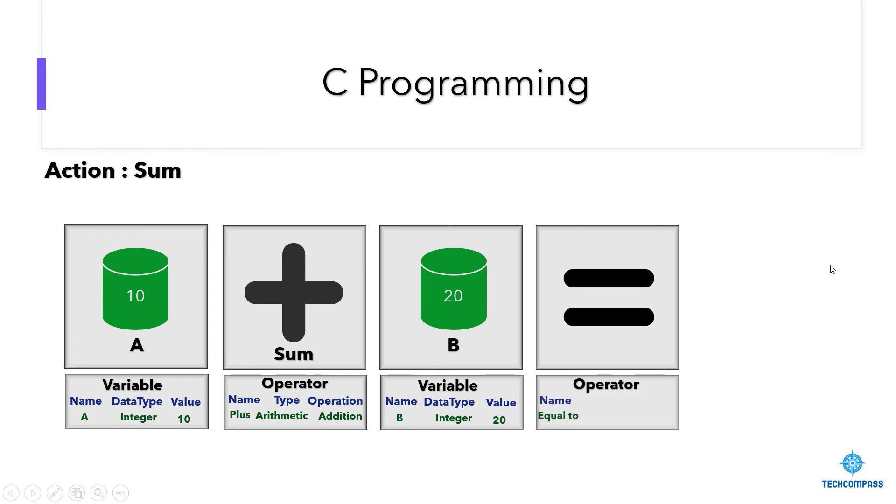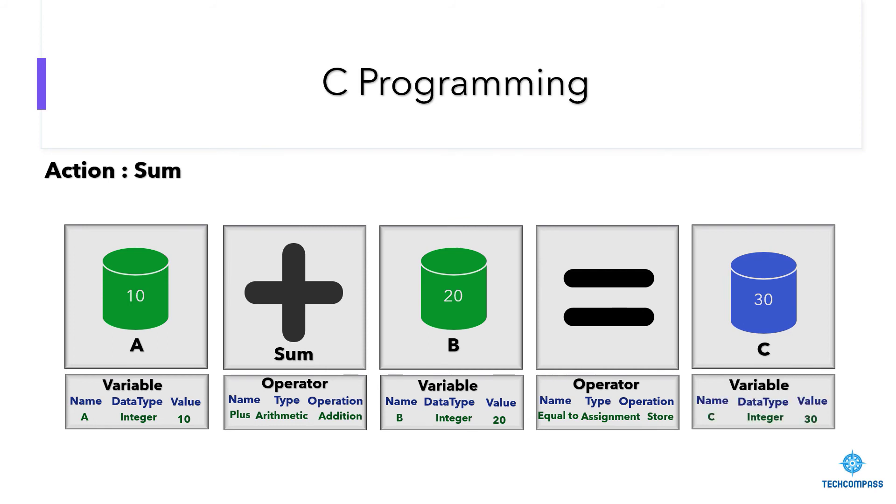Next, we are using an equal to operator to store the results of addition of A and B variable. To store the result of an operation, we need an operator to store the data. The type of this operator is assignment. We call this the assignment operator. What it does is simply stores the value into a memory location of the variable present on its left hand side. We have used the variable C. In that, our result 10 plus 20, 30 got stored. Just the sum task requires variables, operators, and you have to differentiate the variables by specific data type. Since we are dealing with integers, it has a data type as integer.